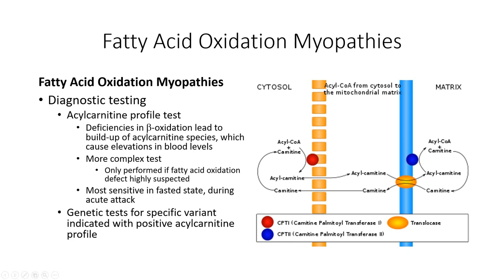This includes an acylcarnitine profile test. This is the intermediate generated in the shuttling of fatty acids into the mitochondria. With errors in fatty acid metabolism, there is a buildup of this intermediate in the cytosol and ultimately into the blood. The sensitivity is not as strong as that for the forearm exercise test, but can be increased in the fasted state or when the patient is symptomatic for pain and cramping. Positive tests confirm the presence of a fatty acid oxidation condition, and the patient can be referred for genetic testing of the most common causes to determine the specific mutation.